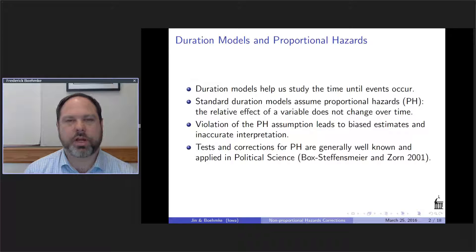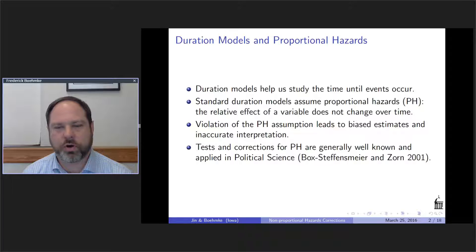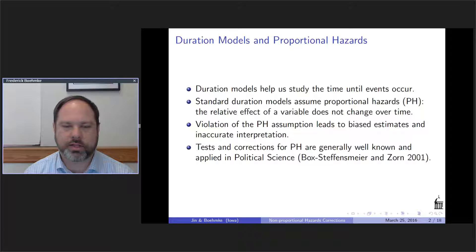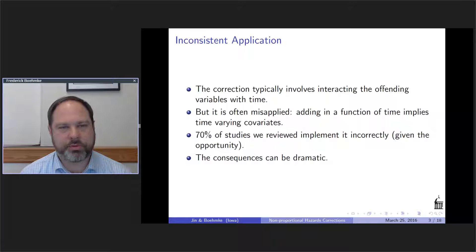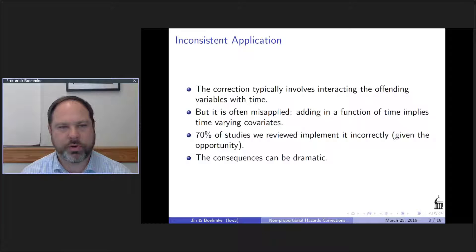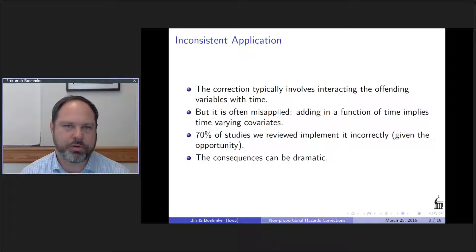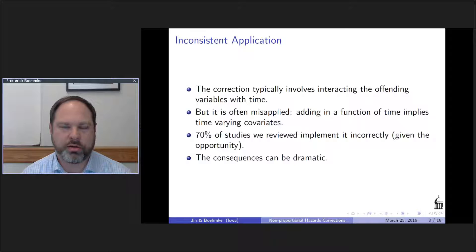Fortunately, there's been a long tradition of work on this issue. There are a variety of tests you can do, and there are corrections you can implement that are generally well known and discussed in the literature. As we found out, though, the application of those corrections is not consistent within the discipline. In particular, we'll highlight one issue that seems to be done incorrectly. Typically what you do when correcting for non-proportional hazards — you can do a test for non-proportionality of a single variable or a global non-proportionality test — you interact the effect of the offending variable with time.